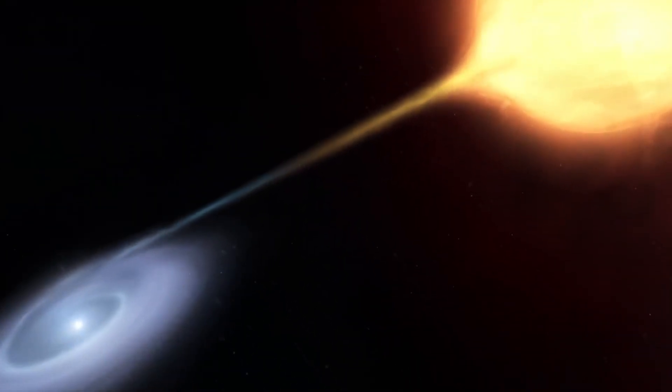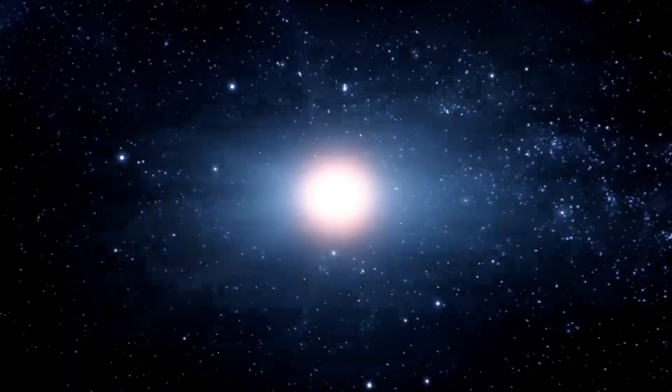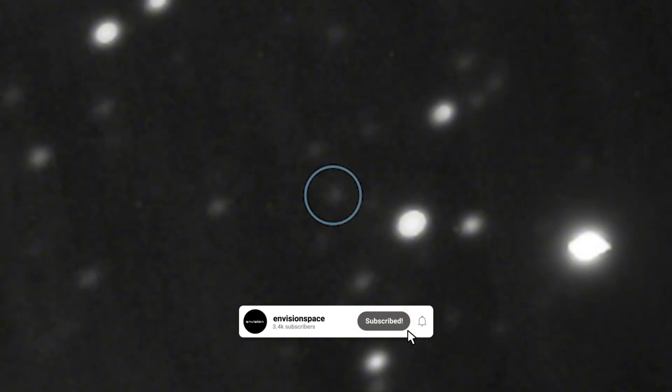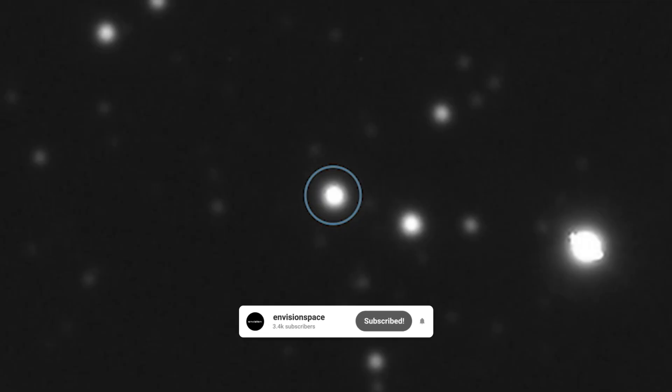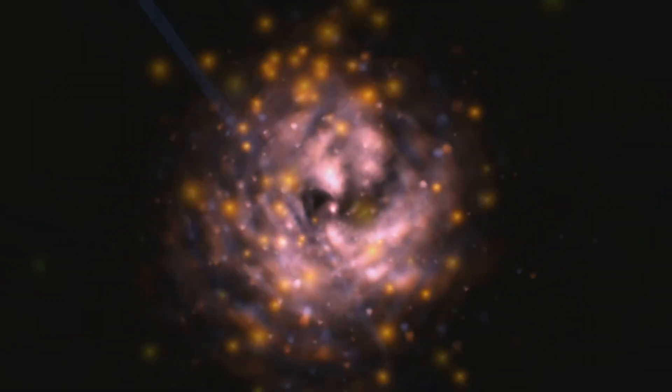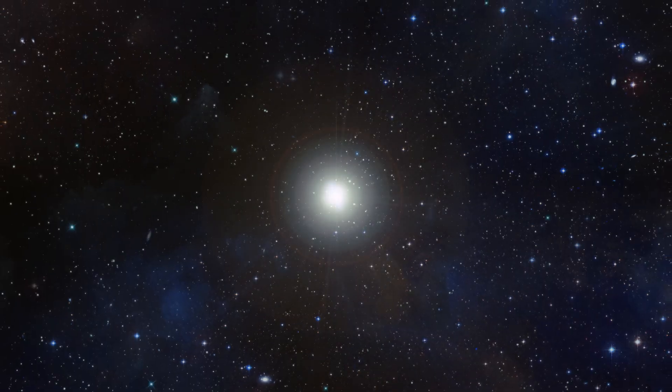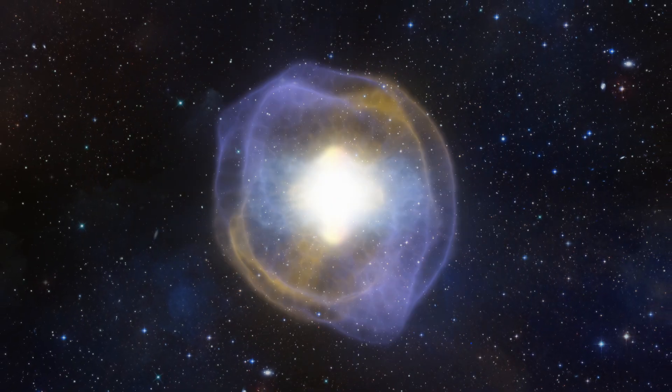The system has had recorded flare-ups in 1866 and 1946, and some historical records suggest earlier occurrences in 1217 and 1787. The periodic outbursts are driven by the cycle of hydrogen accumulation and ignition on the white dwarf, making TCB a recurrent nova with a flare-up roughly every 80 years.